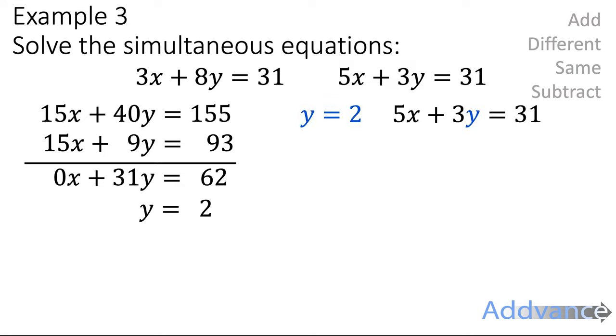Now we can substitute y equals 2 into the second equation or into one of the equations. It doesn't matter which one. 5x plus 3 times 2 is 31. 5x plus 6 is 31. We take 6 off both sides. And we get 5x equals 25 divided by 5. x equals 25 divided by 5, which is 5. We now think that y equals 2 and x equals 5.